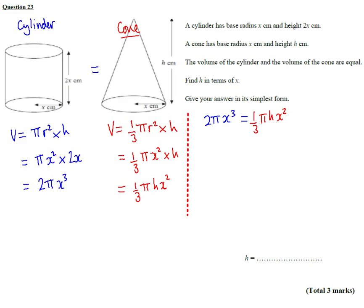And then if I just carry on and solve this, I'm just going to turn to black. So we can see on both sides of this equation, if I times it by 3 first to get rid of the third, I get 6 pi x cubed is equal to pi h x squared.